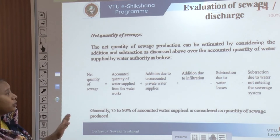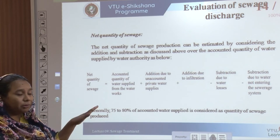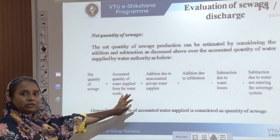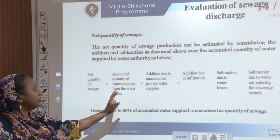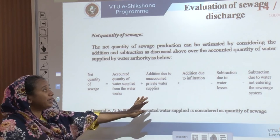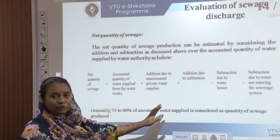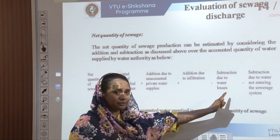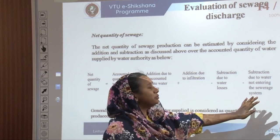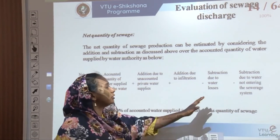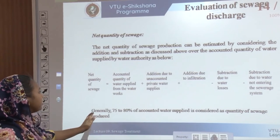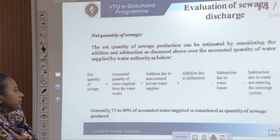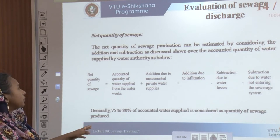The net quantity of sewage is calculated as: accounted water supply (from the municipal corporation) plus addition due to unaccounted private water supplies, plus addition due to infiltration, minus subtraction due to water losses, minus subtraction due to water not entering the sewerage system. Generally, 75 to 80 percent of the accounted water supply is considered as the quantity of sewage produced.